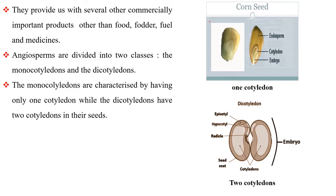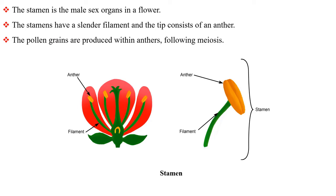Angiosperms are divided into two classes: the monocotyledons and the dicotyledons. The monocotyledons are characterized by having only one cotyledon while the dicotyledons have two cotyledons in their seeds. The stamen is the male sex organ in a flower. The stamens have a slender filament and the tip consists of an anther. The pollen grains are produced within anthers following meiosis.